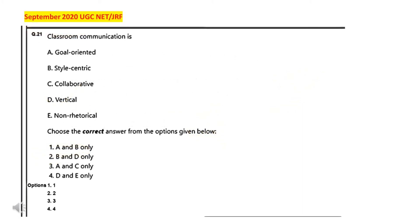Next question: classroom communication is — A) goal oriented, B) style centric, C) collaborative, D) vertical, and E) non rhetorical. Choose the correct answer from the options given below: A and B only, B and D only, A and C only, and D and E only.